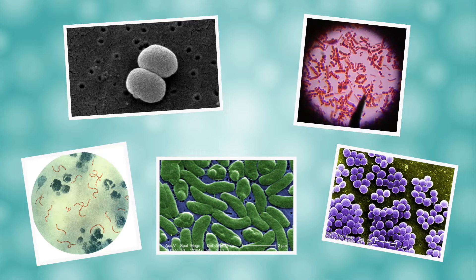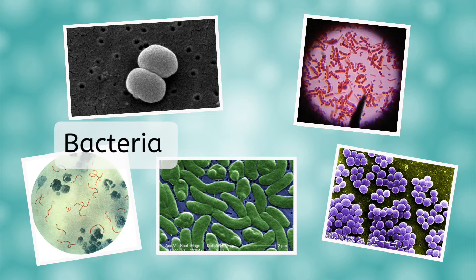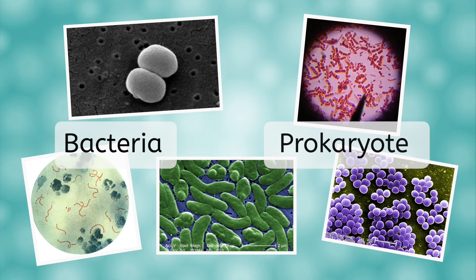Did you make your guess? These are all types of bacteria. Bacteria cells are a type of cell called a prokaryote. They are all unicellular and very tiny. Some bacteria can make us sick, but some are actually helpful to us. We'll look at some examples of both as we go through the lesson.